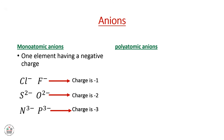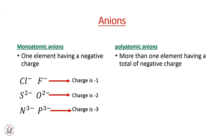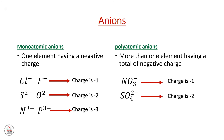Now we will move to the polyatomic anions. They are more than one element having a total negative charge. For example, NO3⁻ has a charge of minus one; SO4²⁻ has a charge of minus two; and finally PO4³⁻ has a charge of minus three.